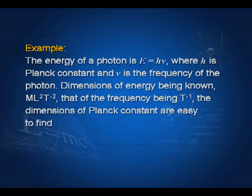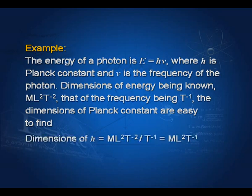Let us take an example. The energy of a photon is equal to h times nu, where h is a constant and nu is the frequency of the photon. The dimensions of energy being known — we have just derived them as M L² T minus 2 — and that of the frequency being T to the power minus 1, the dimensions of Planck's constant h are easy to find. We write dimensions of h equal to M L² T minus 2 divided by T to the power minus 1, which gives us M L² T to the power minus 1.